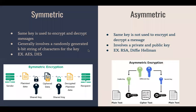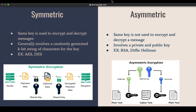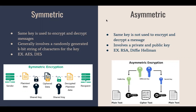This brings us to symmetric and asymmetric encryption, which helps solve the key distribution problem. Most ciphers fall under these two categories. Symmetric encryption uses the same key to encrypt and decrypt — famous examples are AES and DES. Asymmetric encryption uses different keys — typically a private and public key — and famous algorithms include RSA and Diffie-Hellman.